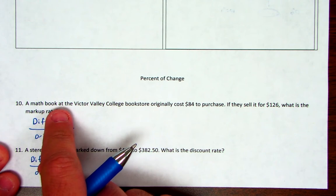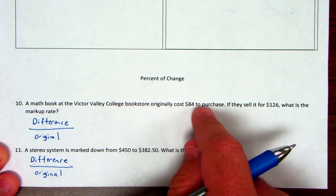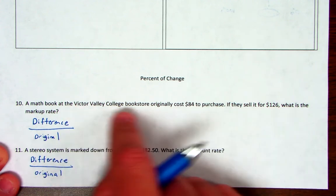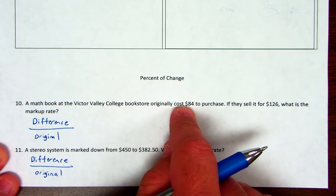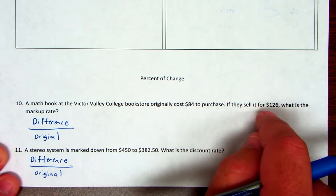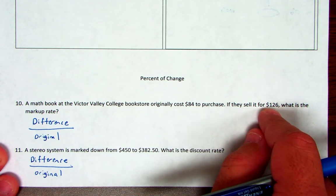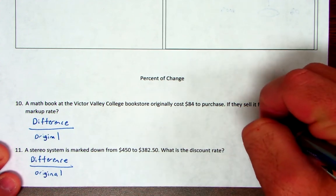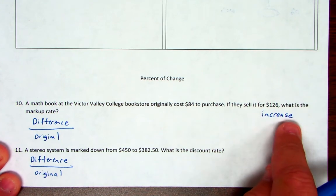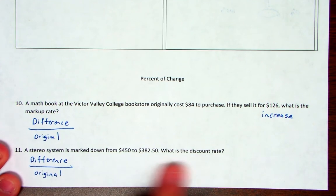Now remember on the percent of change, you're going to have to tell me, is it an increase or a decrease? So let's see. A math book at Victor Valley College Bookstore originally cost $84. If they sell it for $126, what is the markup rate? Well, original, new. So to go from the original to the new, did the price increase or decrease? Well, Mr. Nolan, the price went up, so that's an increase. Very good, guys. So right there on your test, you answered part of the question. I'm not going to do that for number 11. I'm going to let you figure that one out.